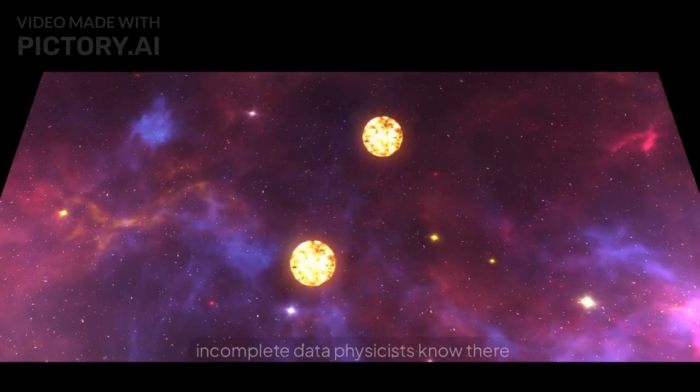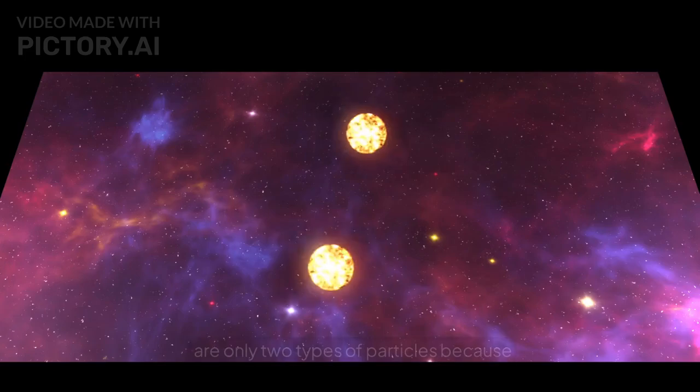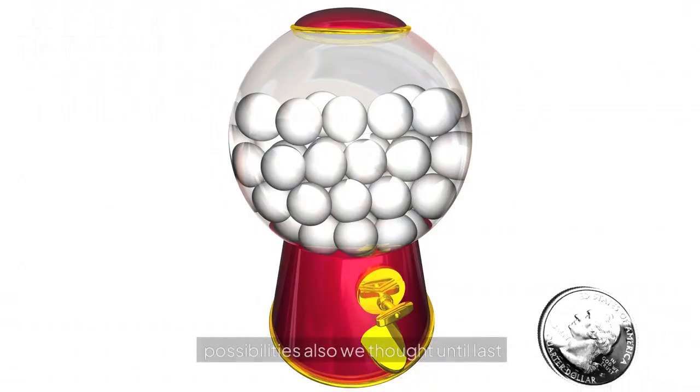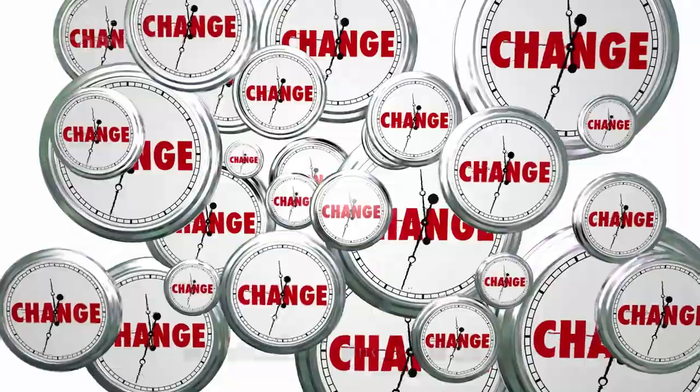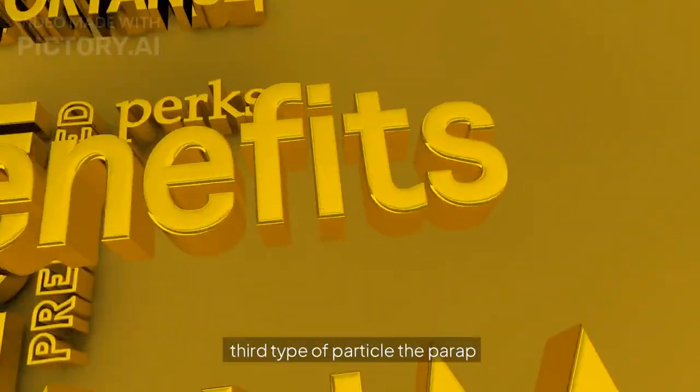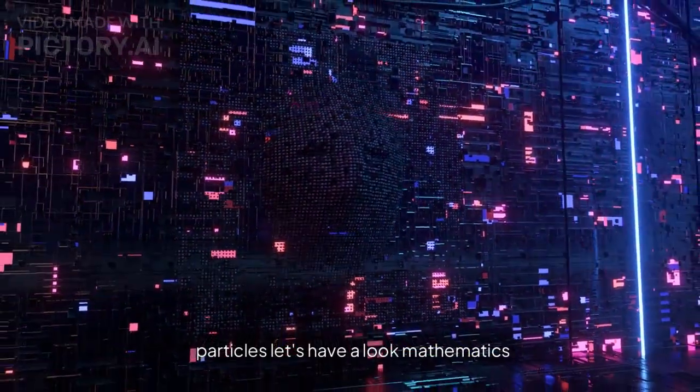Those who can extrapolate from incomplete data. Physicists know there are only two types of particles because those are the only mathematical possibilities. Also, we thought until last week, because a team of physicists from Rice University in Texas says there are a third type of particle: the paraparticle. Let's have a look.